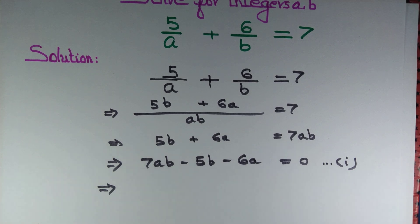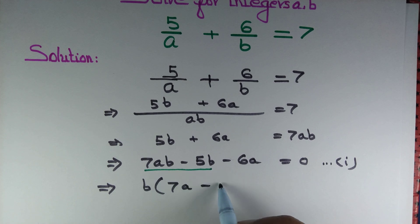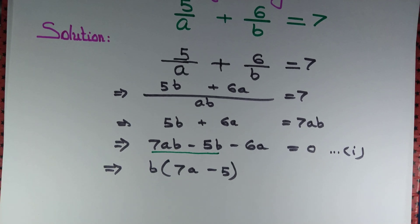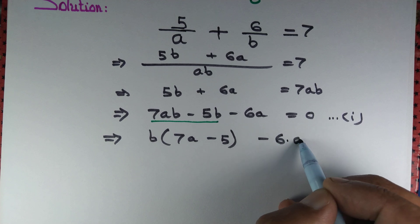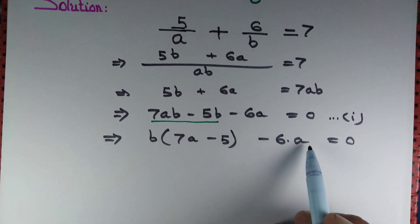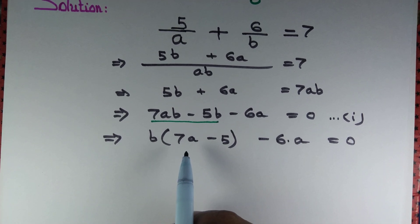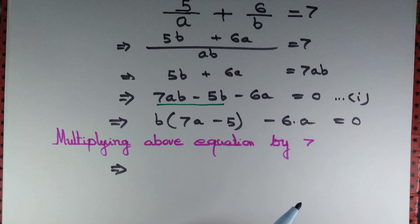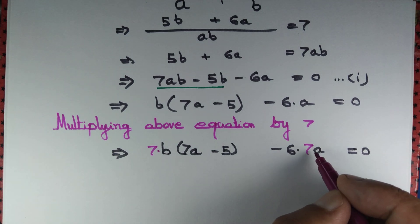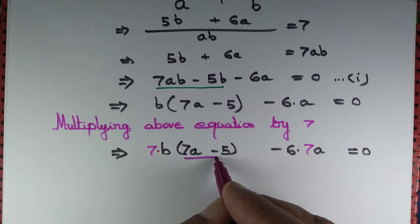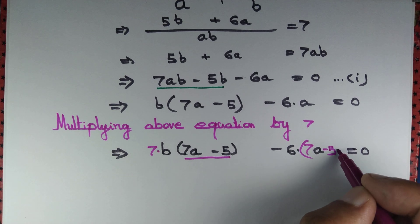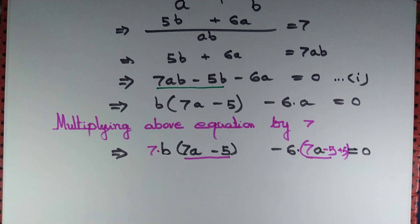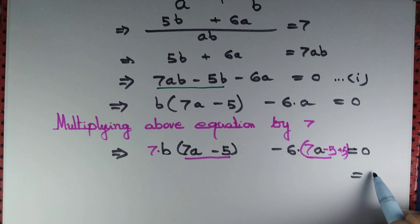From 7ab - 5b, we can take b common to get b(7a - 5). However, we cannot yet factorize the -6a term. If we multiply the whole equation by 7, we can create a 7a - 5 factor in that term too. We subtract 5 and then add 5 to engineer the factor. Moving the extra constant -6×5 = -30 to the right-hand side gives +30.